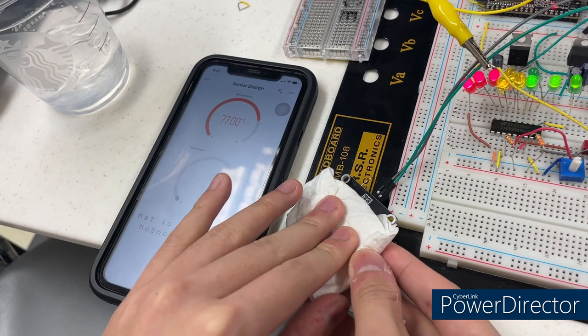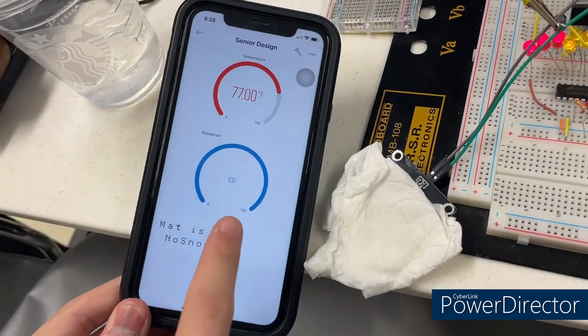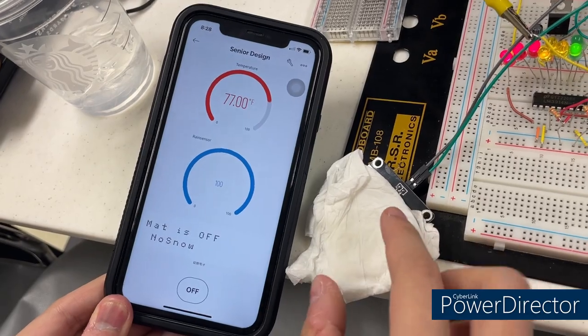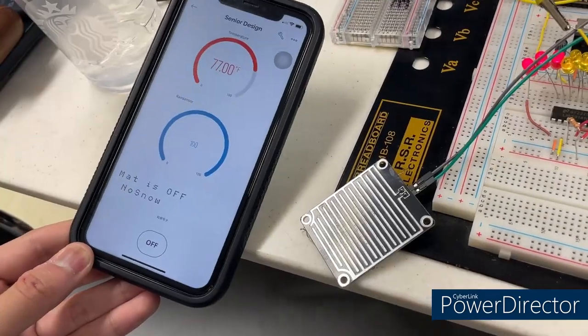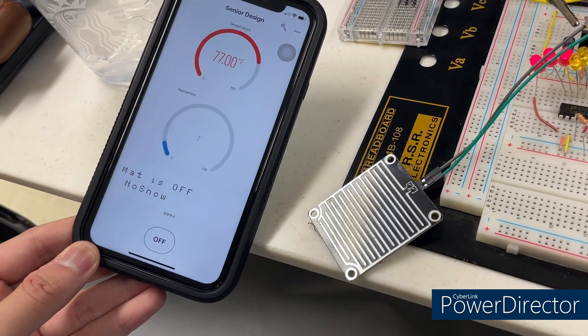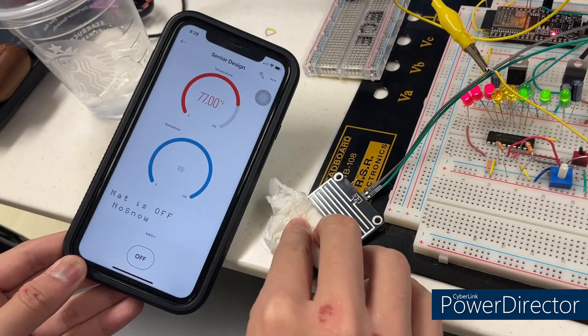When I put the wet tissue onto the rain sensor, you can see it detects there is water on it. When I take it away, the rain sensor reading drops because only some parts are covered. If I only put it on a little bit, the reading is lower.